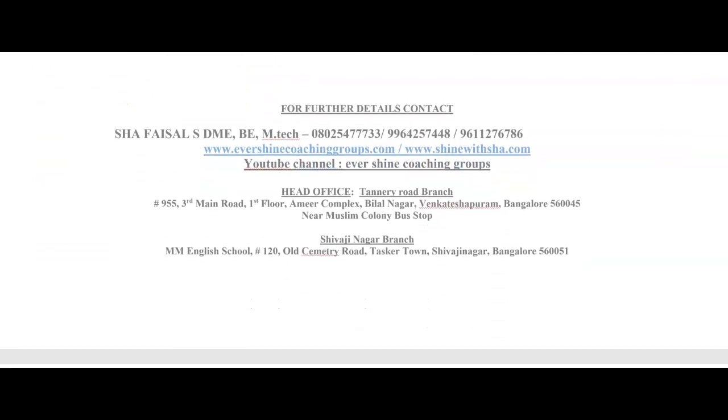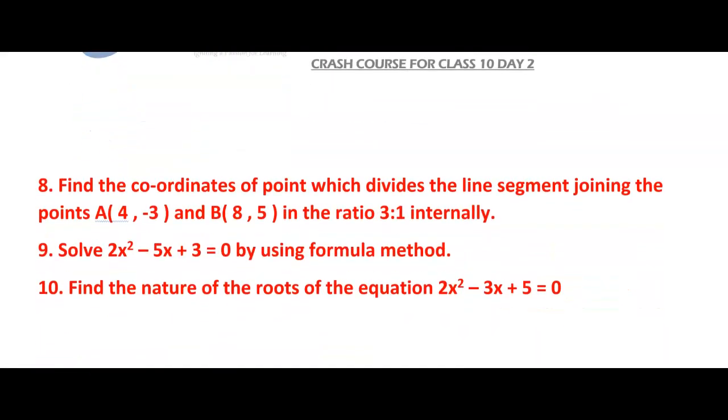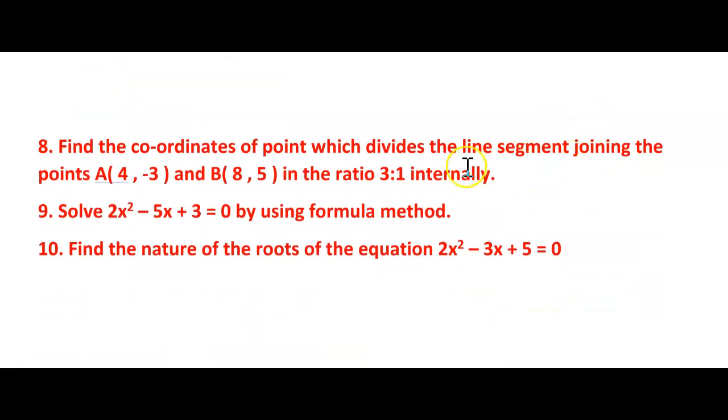And next, coming back to question number 8. Find the coordinates of point which divides the line segment joining the points. They have given two points coordinates in the ratio 3 is to 1 internally. Actually, here we have two conditions internally and externally, but they have mentioned in your textbook internal concept. So we are giving the problem internally, but still time being, you can learn the condition of externally also. And especially the CBSE students, if you are following this video, try to practice externally problems also. The method will remain same, but externally condition just it will be different.